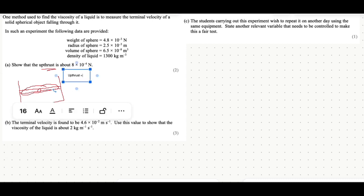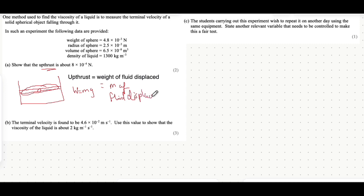We can say upthrust is equal to the weight of fluid that's displaced. Although we can't find upthrust directly, we can find it using this equation. We know weight equals mg, so we can separate this into the mass of fluid displaced multiplied by g. How do we find the mass of fluid that's displaced?